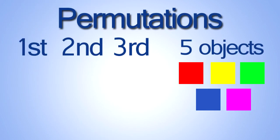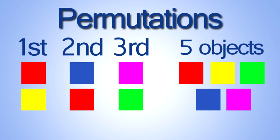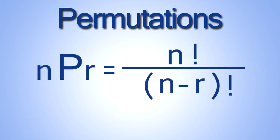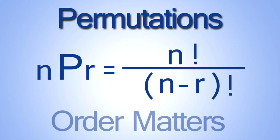A permutation is an arrangement of objects in a specific order. The order is important in permutations. Remember the formula for permutations is n factorial divided by n minus r factorial, where n is the total number of objects and r is the number of those objects that you want to arrange in a specific order.